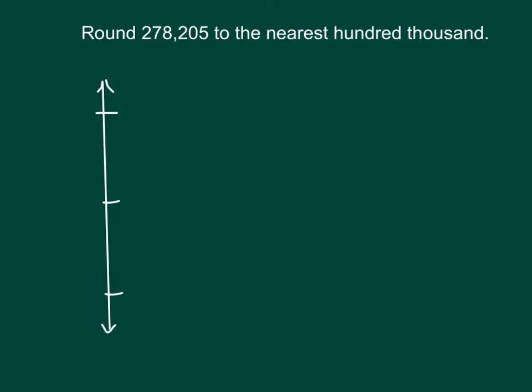For this problem, we are asked to round 278,205 to the nearest 100,000. How many hundred thousands are in this number? Right, there are two.